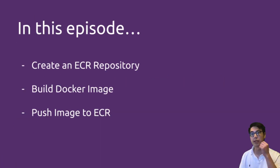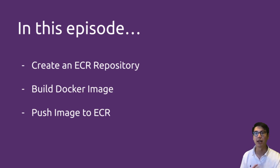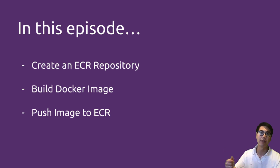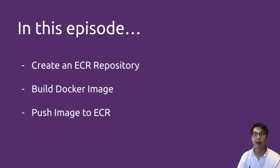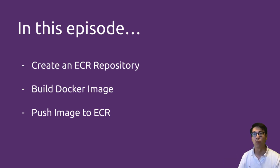We're going to do these three simple things: create an ECR repository, build a Docker image from a Dockerfile that we have on disk, and push that image to ECR. Before we get started, please make sure you subscribe to Pulumi TV. Click that subscribe button below — love to hear your feedback, leave comments, like the video. I just want to hear what you're thinking. So, let's get started.